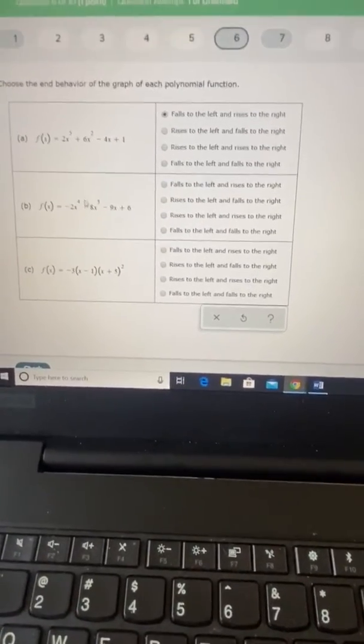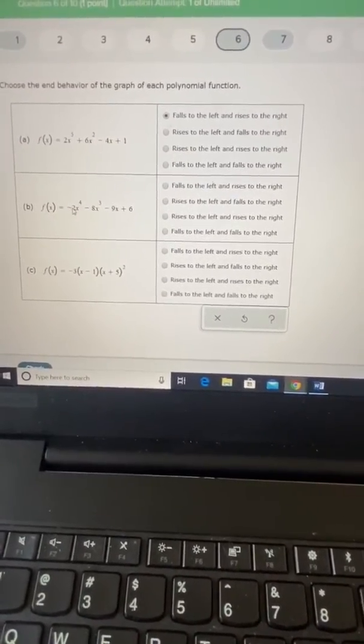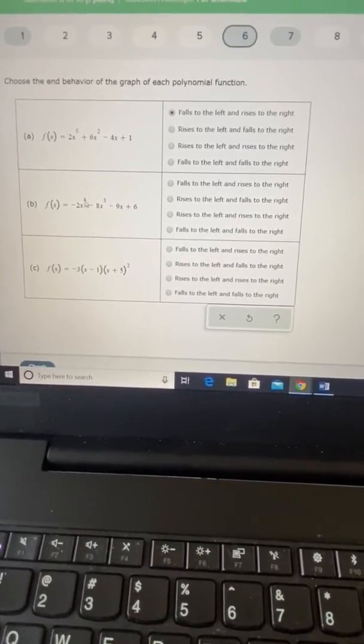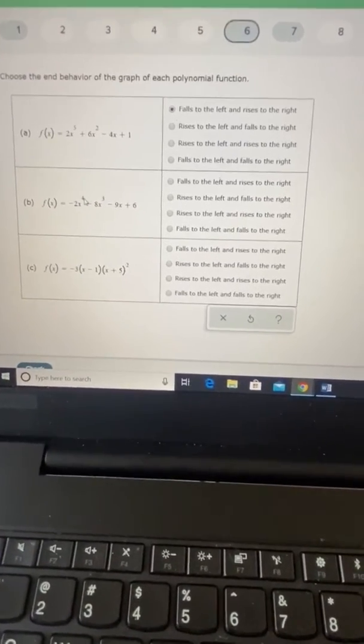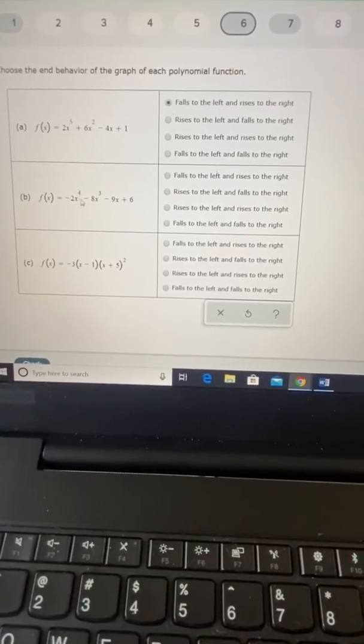B, again, we look at that first term. So we have negative two as our leading coefficient, and this is x to the fourth. So anytime you have even degree, like x to the fourth,